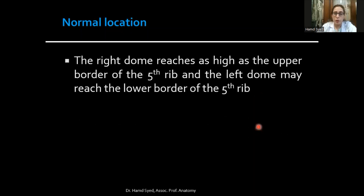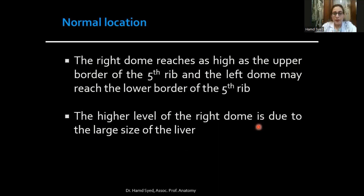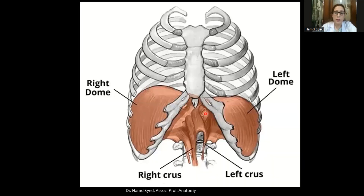Normally, the right dome reaches as high as the upper border of the fifth rib, whereas the left dome may reach the lower border of the fifth rib. The right dome is higher because it lies just above the large-sized liver. We count ribs from the second costal cartilage marked at the sternal angle of Louis. These are the crura of the diaphragm, which we'll discuss in the next few slides.